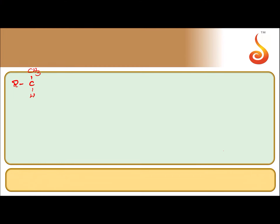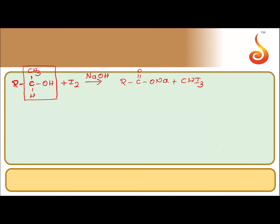An alcohol with CH3CHOH group, when treated with iodine in the presence of sodium hydroxide, will form iodoform and the sodium salt of carboxylic acid. Iodoform is a yellow precipitate.